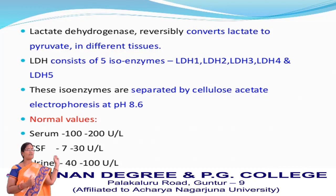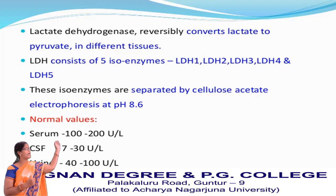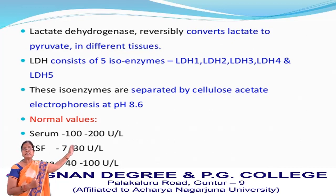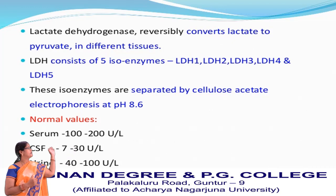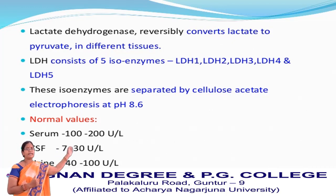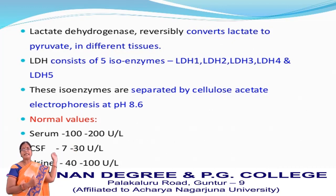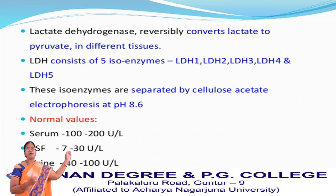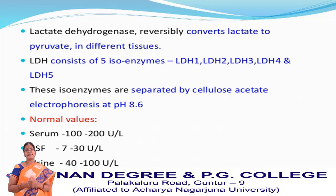Coming to the normal values of lactate dehydrogenase: serum contains 100 to 190 units per litre. Cerebrospinal fluid (CSF) contains 7 to 30 units per litre. Urine contains LDH in a range of 400 units per litre. These are the normal values of lactate dehydrogenase.